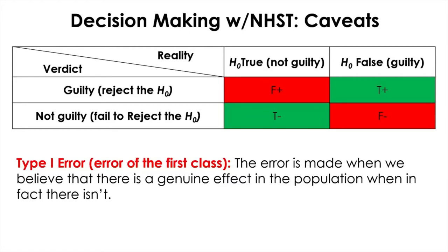Imagine a hypothetical courtroom where the death penalty is possible if the defendant is convicted. Here we have two mutually opposing and exclusive verdicts: innocent, which is our null, or guilty, which is our alternative. Understandably, they cannot be considered equally weighted, as the consequence of the guilty verdict is permanent and irreversible once the sentence is carried out. Therefore, the judge will be much more careful not to return a guilty verdict unless the evidence supports way beyond a reasonable doubt, making the case extremely strong.